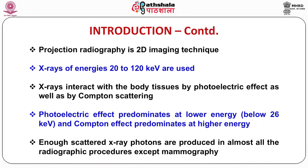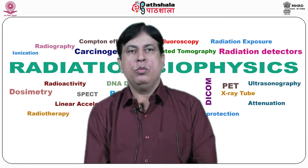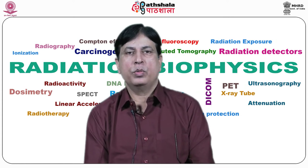In case of higher atomic number material like bone, which has effective Z of 13, the probability of interaction of X-rays of energy about 35 keV through photoelectric effect and Compton scattering is approximately the same. X-rays of energy over 35 keV are generally used for almost all radiographic procedures except mammography, and hence enough scattered X-ray photons are produced in almost all radiographic procedures except mammography. With this introduction, we will now discuss some salient features of projection radiography.